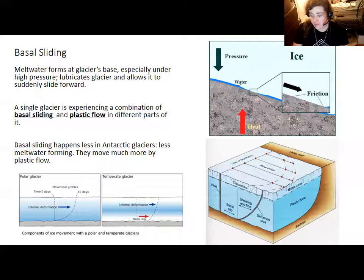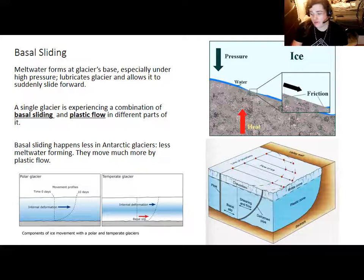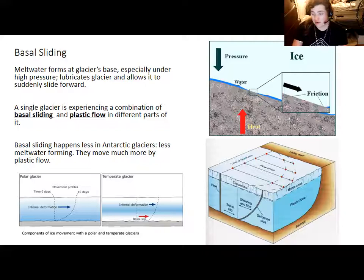A single glacier experiences a combination of basal sliding and plastic flow in different areas. Basal slip often occurs where pressure is highest — since high pressure allows meltwater to build up — while plastic deformation dominates where pressure is less, such as at the front of the glacier. In a polar glacier, since there is so little meltwater, internal plastic deformation dominates throughout, and a marked line appears warped in the direction of movement. In a temperate glacier, the line is more vertical because basal slip also slides the ice downhill. Overall, basal slip is less dominant in Antarctic glaciers due to lower meltwater.